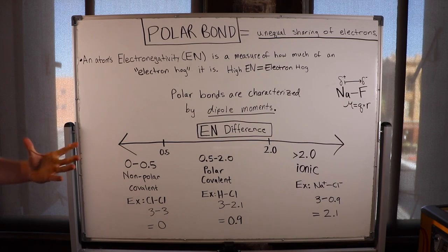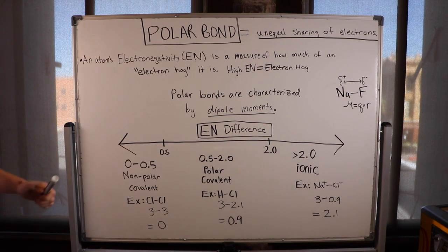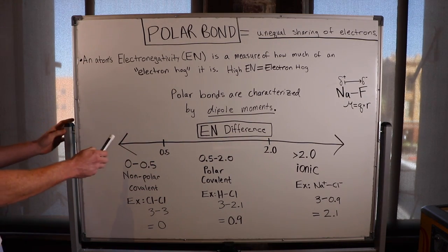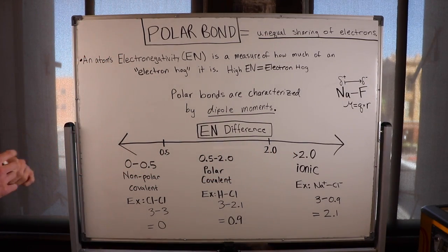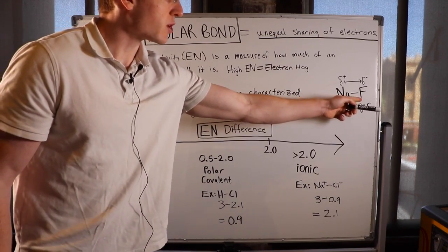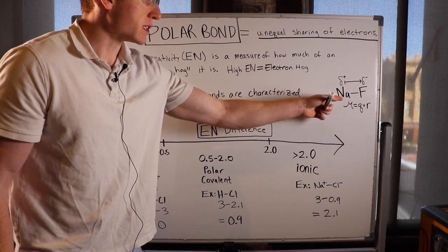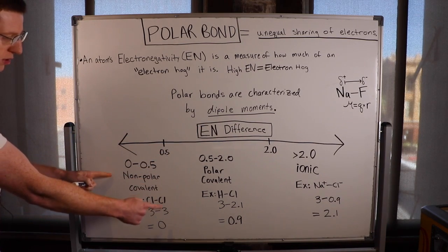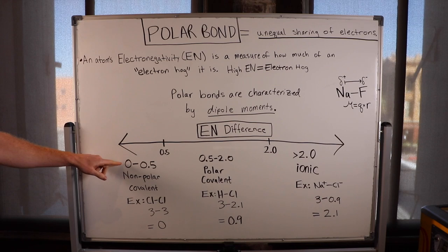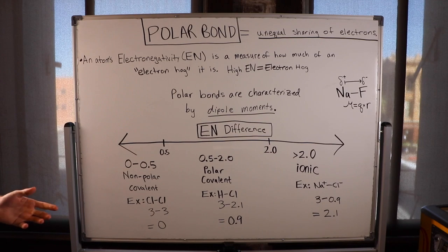There are grades of electronegativity difference that correspond to different types of bonds. The electronegativity difference is found by simply subtracting the electronegativity levels of two atoms. When there is a relatively small electronegativity difference — between zero and 0.5 — we call this a nonpolar covalent bond. An example would be Cl₂: both chlorine atoms have an electronegativity level of 3, so 3 minus 3 is zero.